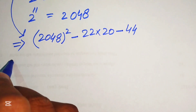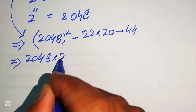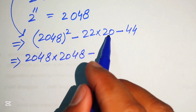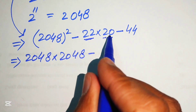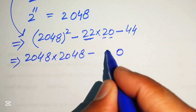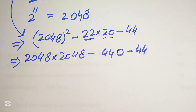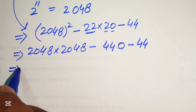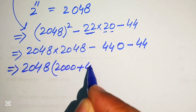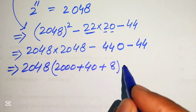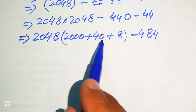We rewrite the expression as 2048 multiplied by 2048 minus the product of 22×20=440 and minus 44. Then we break 2048 as 2000 plus 40 plus 8. Adding 440 and 44 gives 484, so we now need to multiply 2048 by each component and subtract 484.